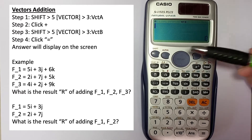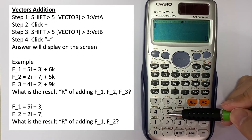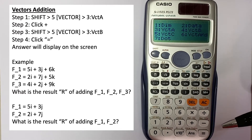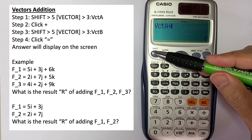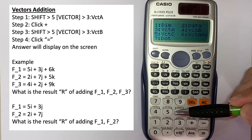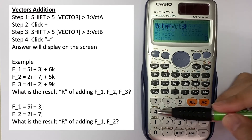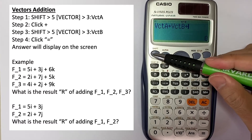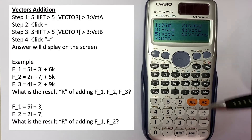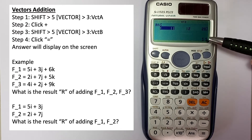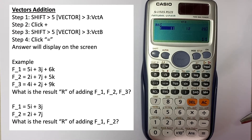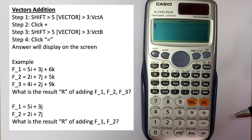To add vectors A, B, and C, go to Shift, then number 5 for the vector menu, and select number 3 for vector A. Press plus, then Shift 5 again and select number 4 for vector B. Press plus, then Shift 5 and number 5 for vector C. Press Equal to get the addition of all three vectors.